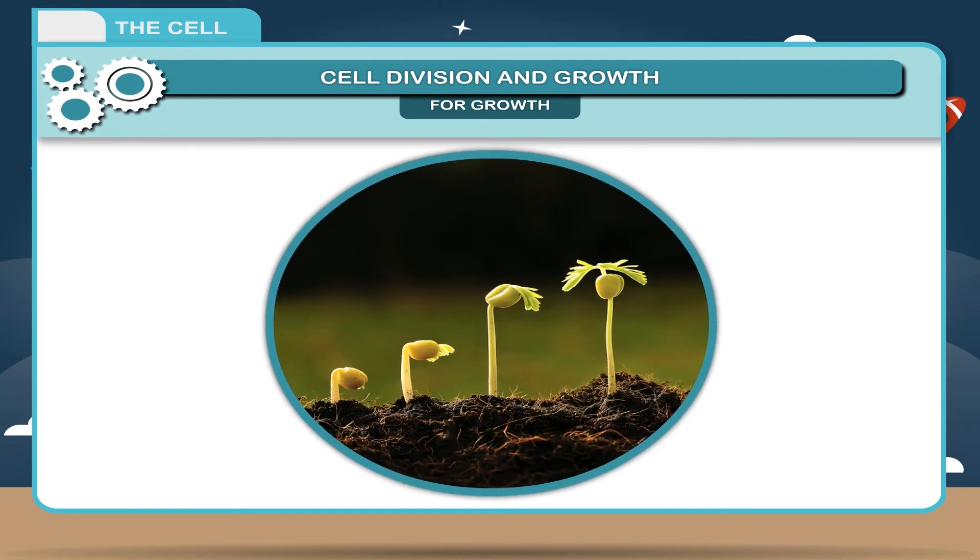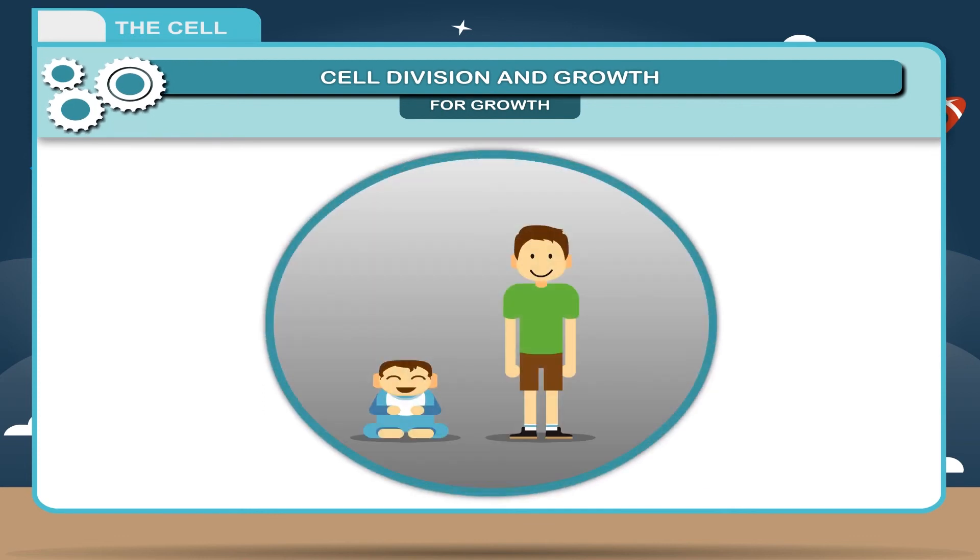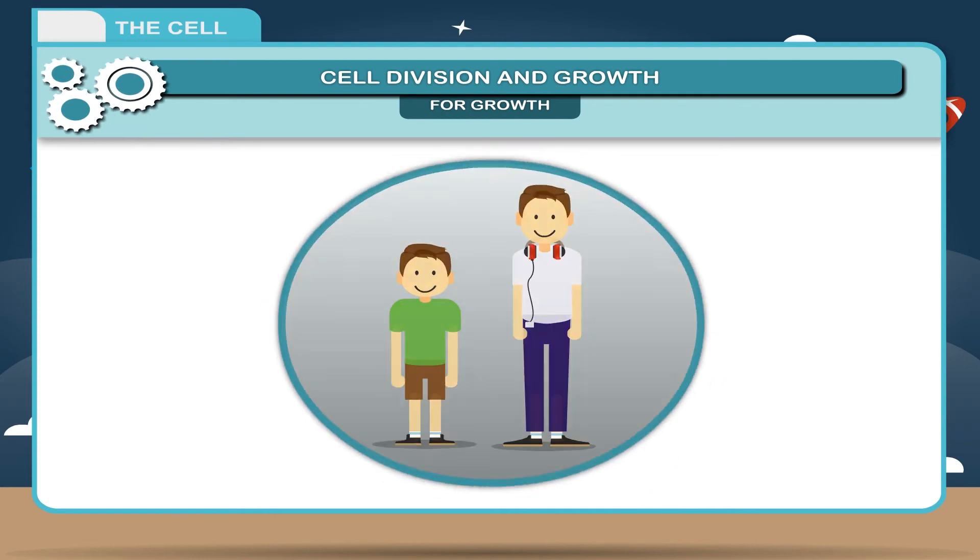For example, a seedling grows into a big plant. A baby grows into a child and then into an adult.